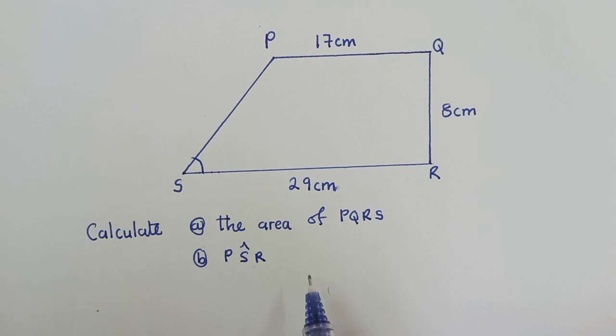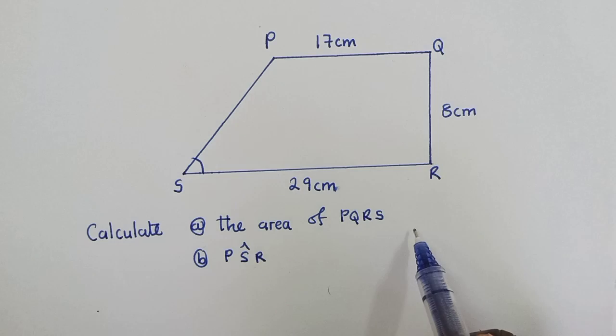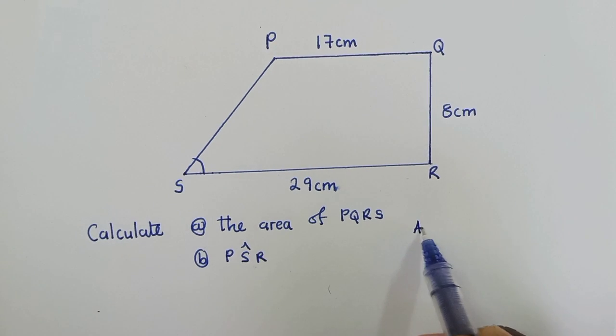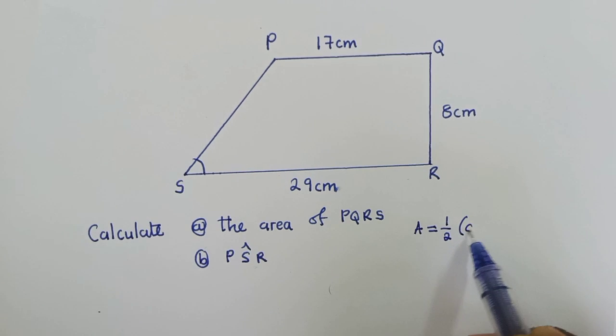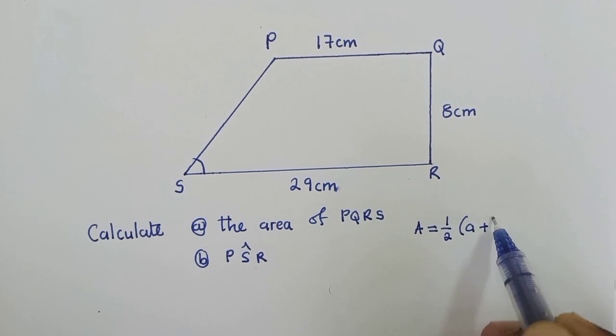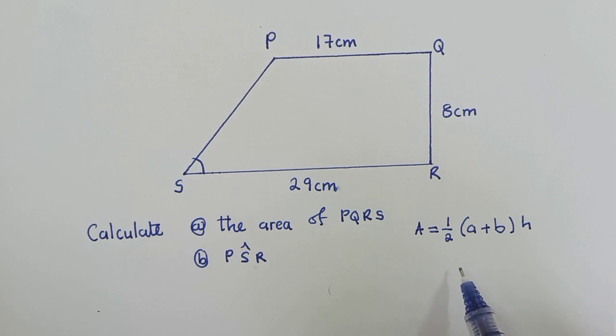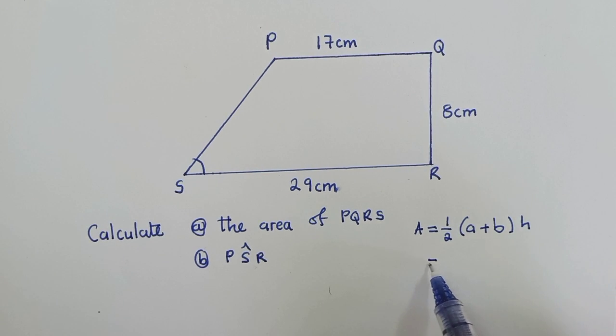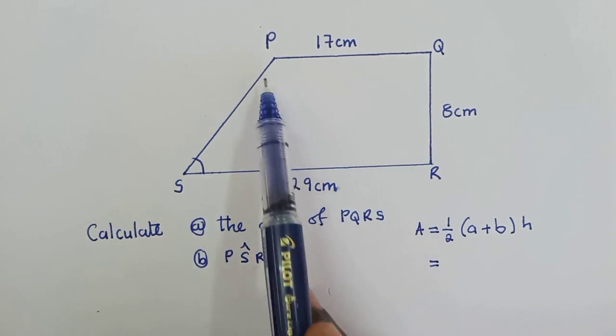So let's start with the area. So if you can see the shape which is here, this is a trapezium. So to calculate area of the trapezium, we use the formula: area is equal to half (A plus B) times H. So what is our A? Our A will be one of these, either this or this. You see, we have got two parallel lines.